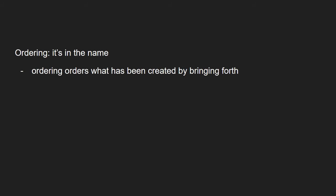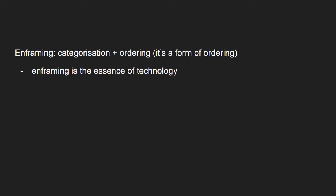We then move to the essence of technology, which is enframing. Enframing is a systematic categorization and reshaping of things. As you can see, enframing is simply a form of ordering. It is the way technology carries out ordering. This means technology is a new way for the cosmic force of ordering to act in our world.